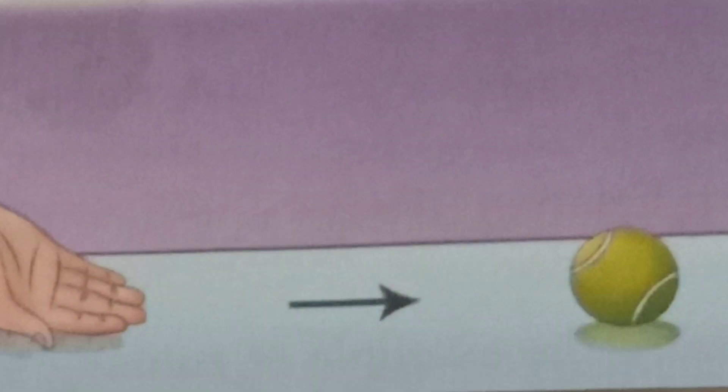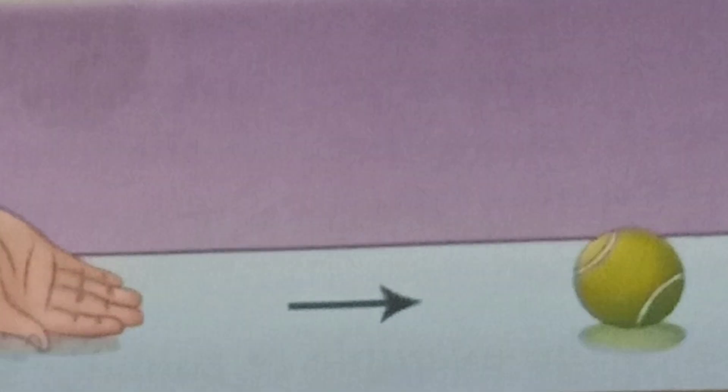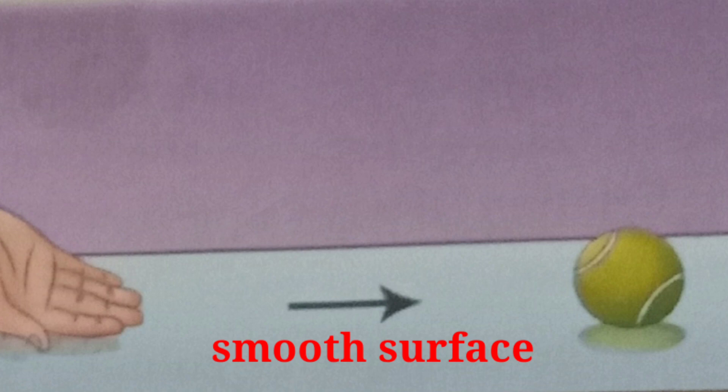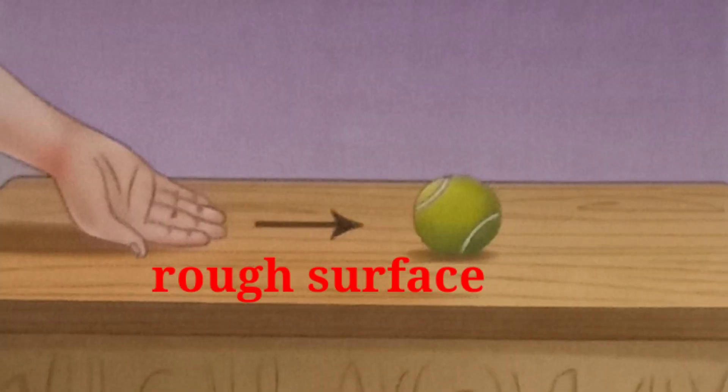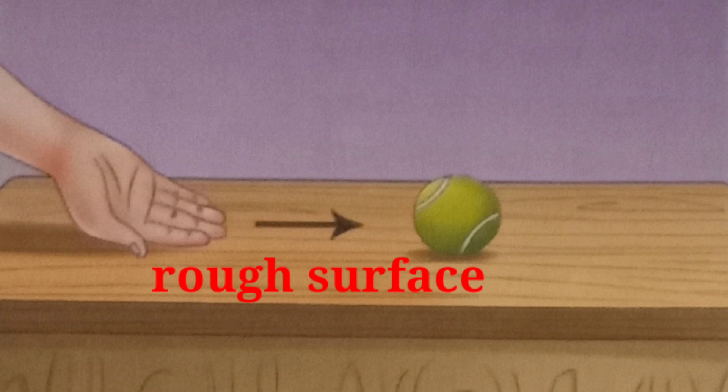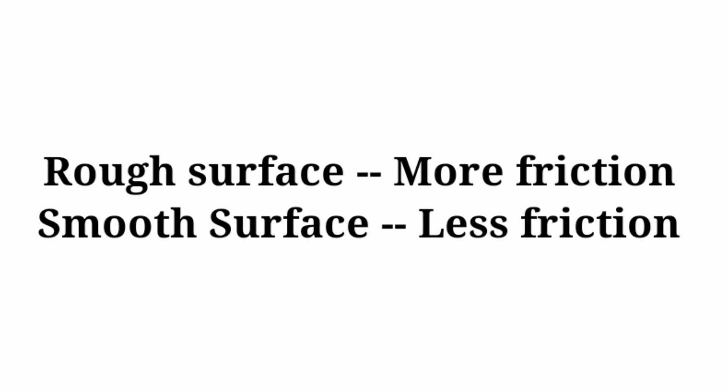But if we roll the ball on a glass top placed on the table, it travels comparatively a longer distance before it stops. Since the glass surface is smooth while the wooden surface is rough, friction is more on the rough surface and less on the smooth surface. So the first factor is roughness or smoothness of the surface.